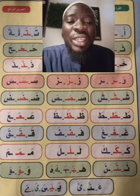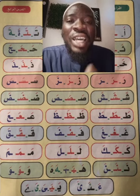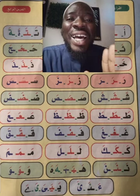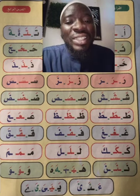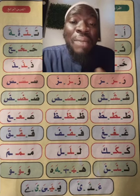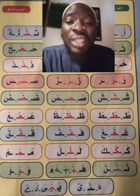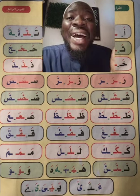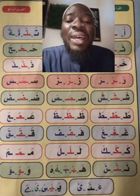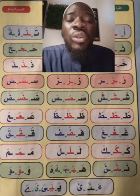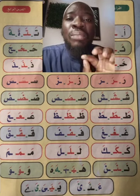The next letter is Kaf. You can see Kaf at the beginning, Kaf at the middle, then Kaf at the end. Kaf with Fathah: KA, KA, KA. Then the next letter is Lam. You can see Lam at the beginning, at the middle, at the end. So Lam with Fathah: LA, LA, LA.